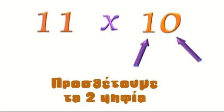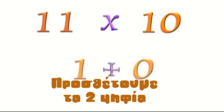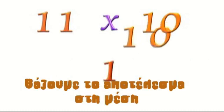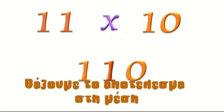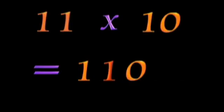Look at the two digits of the number you're multiplying your 11 by, which for 10 are a 1 and a 0. Add the two digits, which is 1 plus 0, or 1. Put the 1 in the middle of the two digits of 10, and you get 110. 11 times 10 is 110.